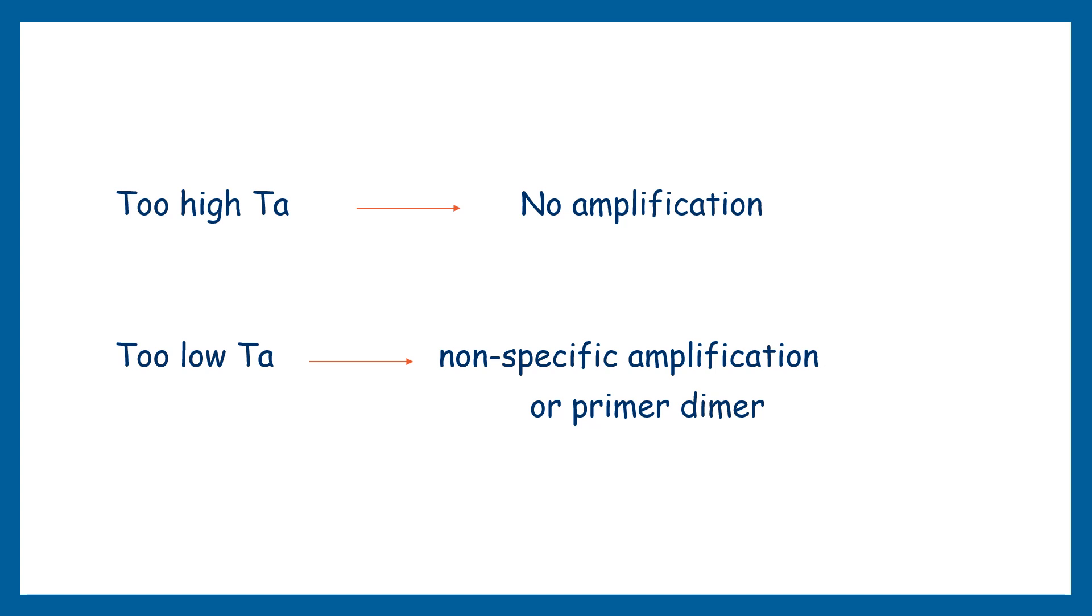When we talk about too low annealing temperature, we may get non-specific amplification or primer dimer because lowering the annealing temperature in PCR can provide flexibility to primers which allow them to bind to different positions in the DNA sequence, therefore it leads to non-specific amplification.